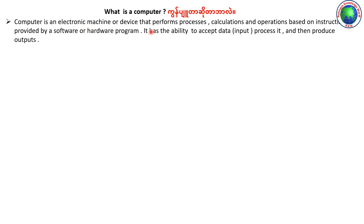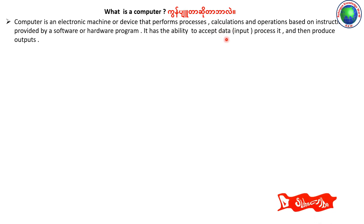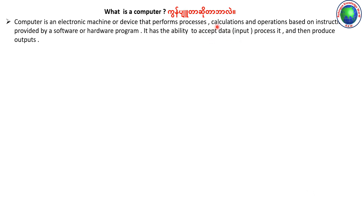The computer machine has the ability to accept data. In computer language, the accepted data is called input. The input is then processed. After processing, it will produce outputs. The output is then produced as a result of the process.